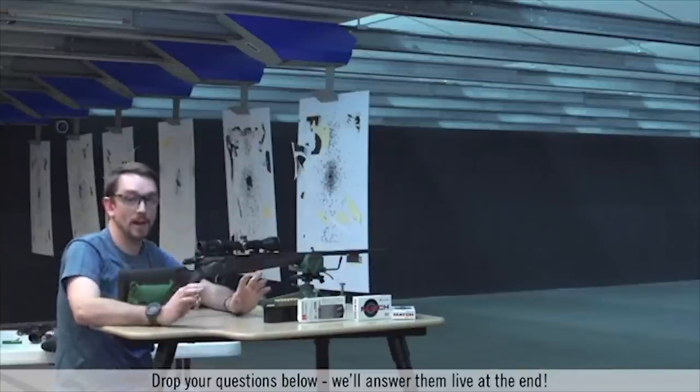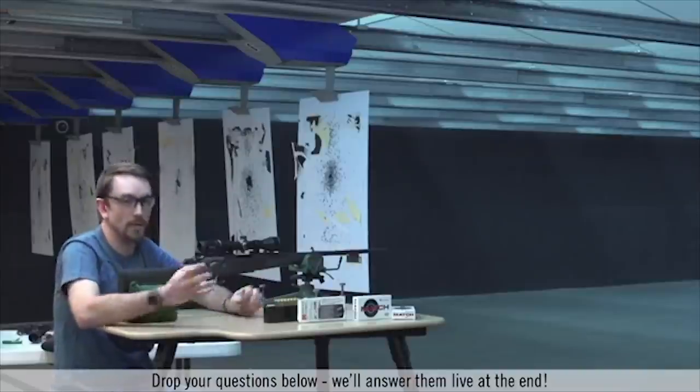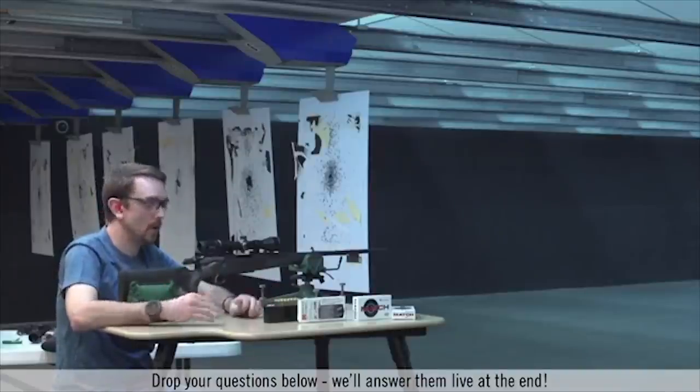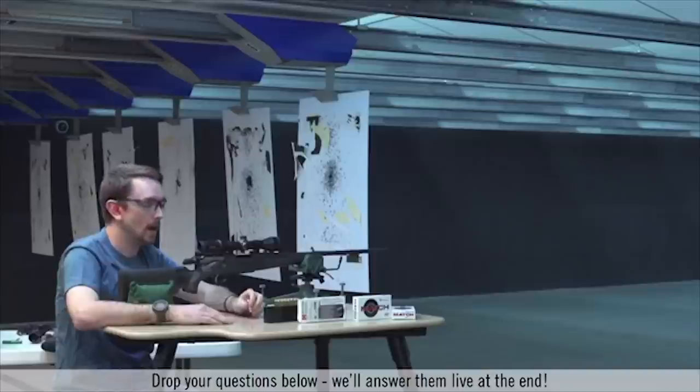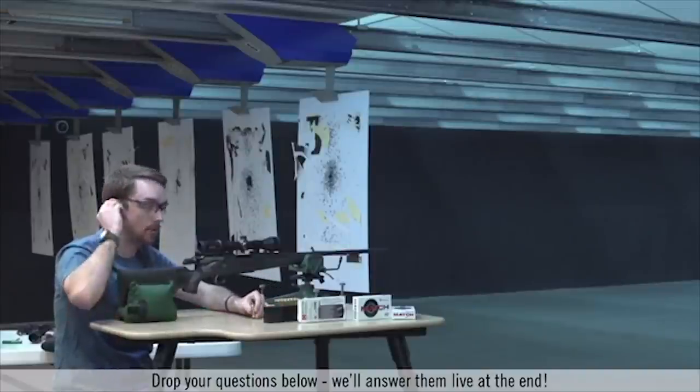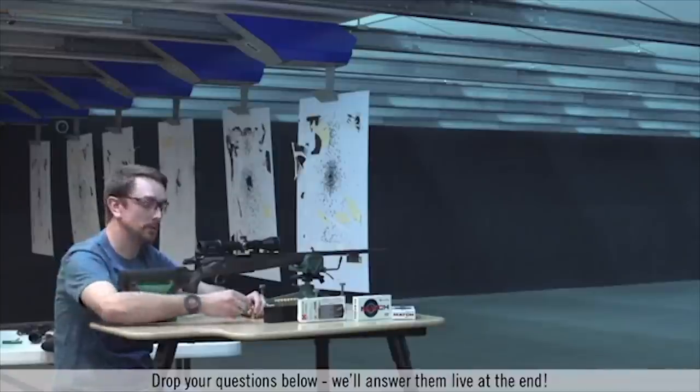And while you can't see that on the target down there, I promise it's dead center. So that was it. Three shots to zero off of a manual bore sight. You shouldn't have to go through boxes and boxes of ammunition when you're shooting to get your rifle sighted in.